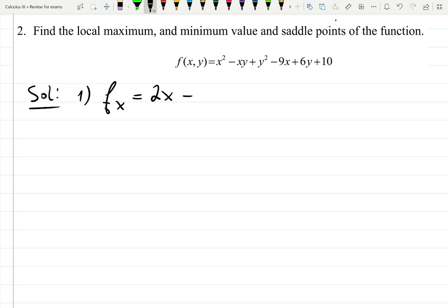The derivative with respect to x is 2x minus y plus 0. y squared gives you 0 minus 9, which comes from minus 9x, plus 0 and plus 0.